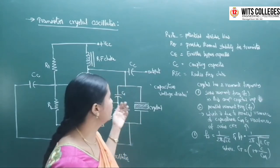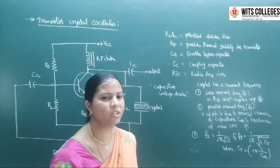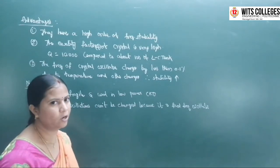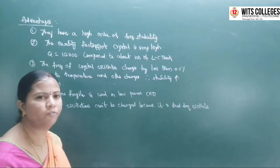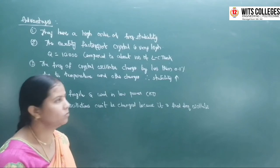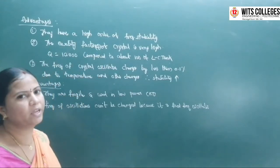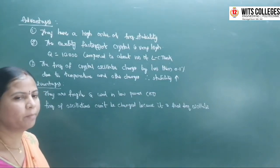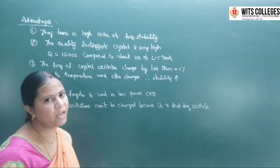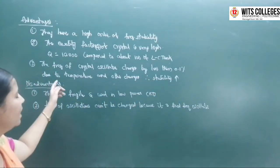When you switch on the power supply, the circuit provides high stability frequency oscillations because in place of inductance we are connecting the crystal. Coming to the advantages of the transistor crystal oscillator — they have a high order of frequency stability. The quality factor of the crystal is very high, about 10,000, compared to about 100 for LC tank circuits. The frequency of the crystal oscillator changes by less than 0.1% due to temperature and other changes, so the stability is very high.